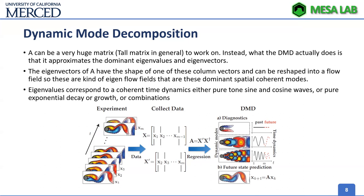In reality, these can be very large, tall matrices. Instead of working with the whole matrices, DMD approximates the dominant eigenvalues and eigenvectors, using only the most dominant modes to cover most of the system's dynamics. Eigenvectors correspond to spatial-domain characteristics — such as flow characteristics in this example — while eigenvalues correspond to coherent time dynamics, which can be pure-tone sinusoidal waves, exponential decay or growth, or any combination.